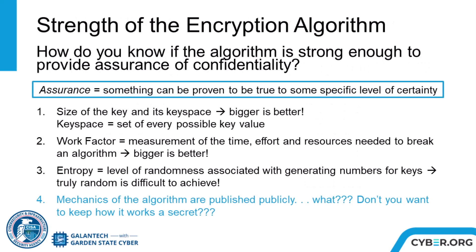How do you know if the algorithm is strong enough to provide assurance of confidentiality? We need to have assurance, which is something that can be proven to be true to some specific level of certainty. First, let's look at key space and work factor. Key space is the set of every possible key value for an encryption algorithm. The size of the key and its key space is important because bigger is better. Work factor is the measurement of the time, effort, and resources needed to break an algorithm.